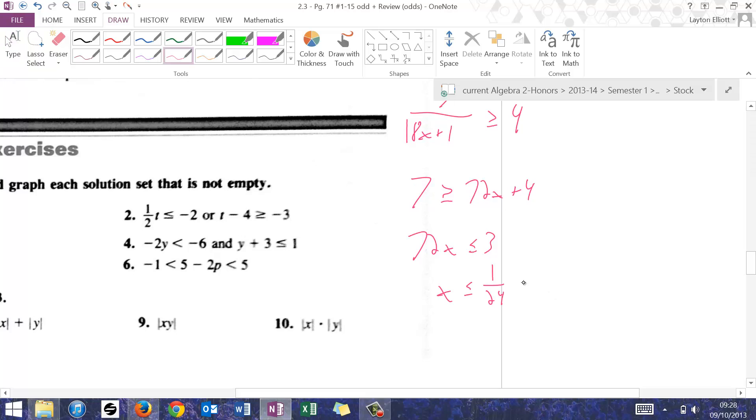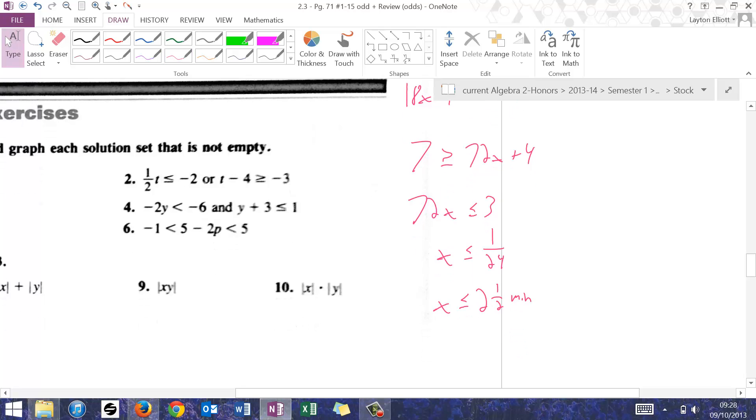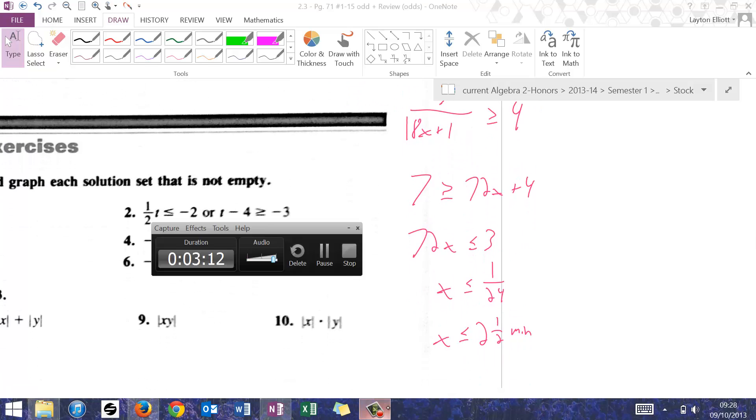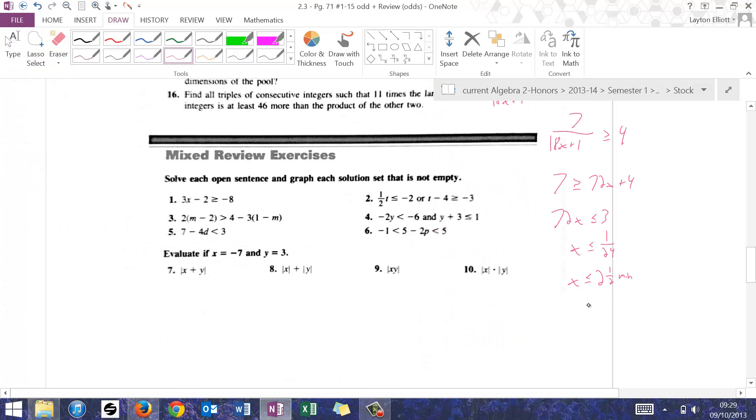1/24th of an hour is—that'd be 2 and a half minutes. Is that right? Yeah. So we could say that if it's 1/24th of an hour, x is less than or equal to 2 and a half minutes. So less than or equal to is at most, so it is at most 2 and a half minutes.